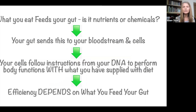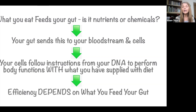What you eat or drink feeds your gut. You've got to ask yourself: is it nutrients or chemicals? What you eat feeds your gut, your gut sends this to your bloodstream and cells, and your cells follow the instructions from your DNA to perform your natural body functions with what you have supplied. The efficiency of how your body performs its natural duties really depends on what you feed your gut. That's why we need to be aware of what we're putting in our gut, because it affects our bloodstream, our cells, and our DNA — they only function based on what we're supplying.